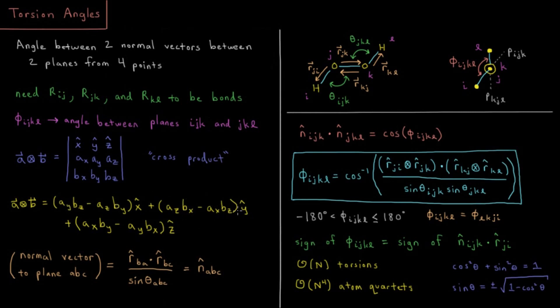Then we have another cyclic permutation to get Z, Y goes to Z, X goes to Y, and Z goes to X. So that gives us the three Cartesian components of a vector which is perpendicular to both A and B. So this defines a vector which is normal to that plane A, B, C.